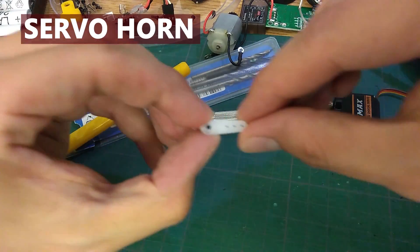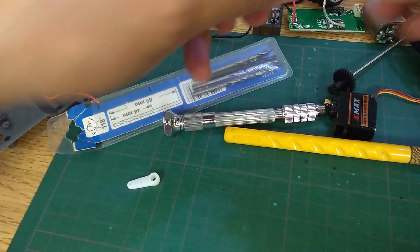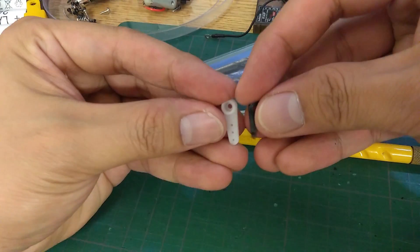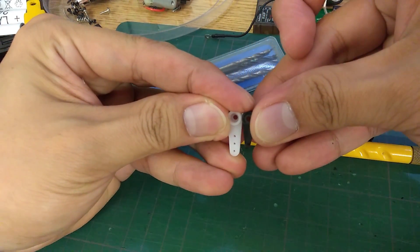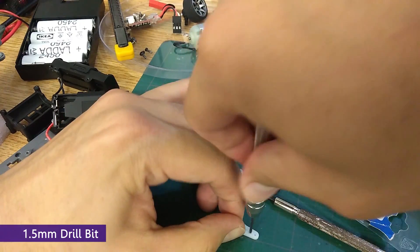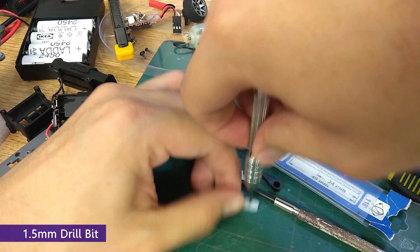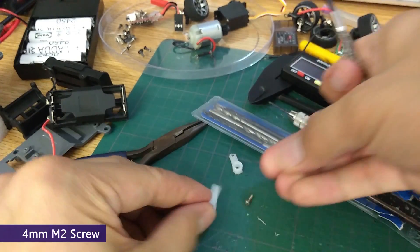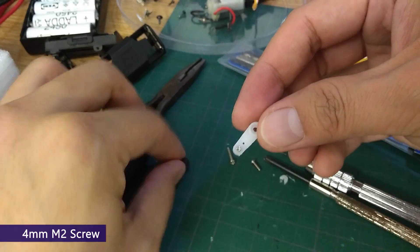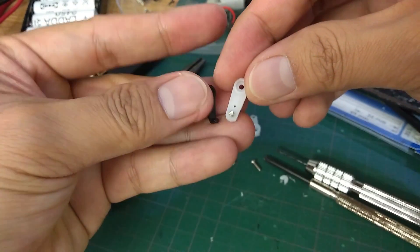Next, let's deal with the servo horn. The original servo horn from this car is not working with this servo so I have to make one. Luckily, the included horn has a hole at the right length. So just drill it with a 1.5mm drill bit and insert a short M2 screw in. Cut the horn to size and it is done.